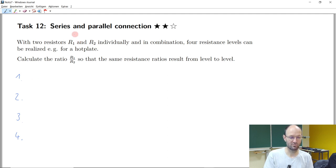So we can assume, for example, that without loss of generality, that let's say R1 is larger than R2. So the smallest resistance level would be when we have the parallel connection of the two.